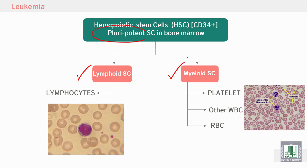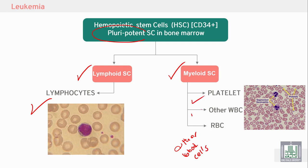Lymphoid stem cells give rise to lymphocytes, while myeloid stem cells give rise to other blood cells — platelets, other white blood cells, and red blood cells.